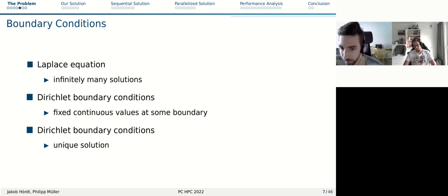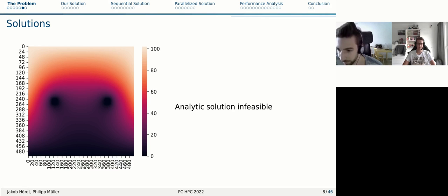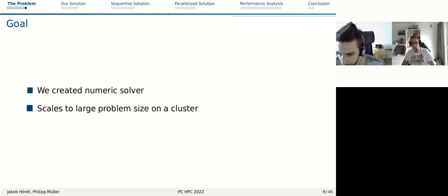A quick note on boundary conditions. The Laplace equation on itself has infinitely many solutions, and to get a unique solution, we need some form of boundary conditions. We focus here on Dirichlet boundary conditions, which are just fixed continuous values at some boundary. Now in this case, we have a more complicated boundary condition. The analytic solution becomes infeasible to compute, and that's why we want to design a numeric solver, which doesn't have any problems with very complicated boundary conditions.